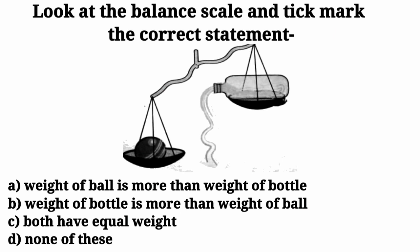We can see the pan with the ball has bent down. Yes, the pan with the ball is bent down. That means here the ball is heavier than the bottle. Option A is the correct statement here and we will put a tick mark at option A.